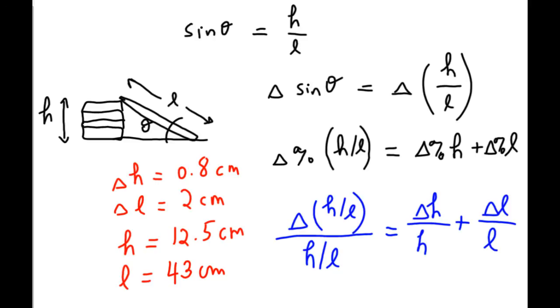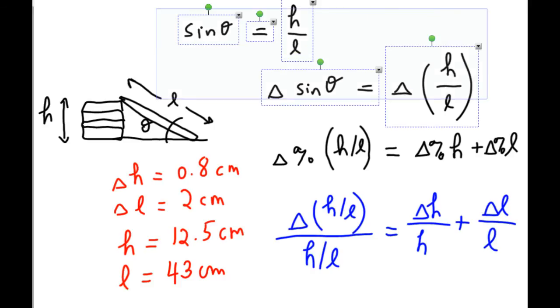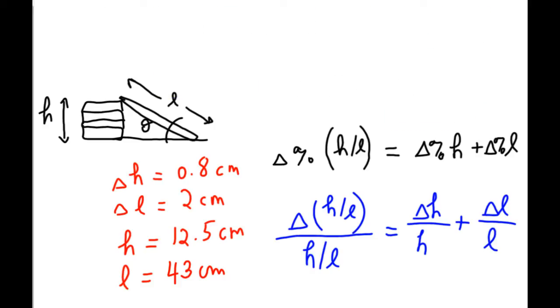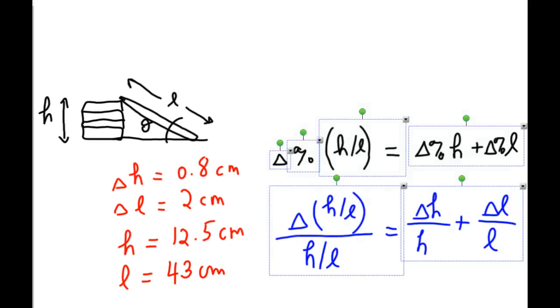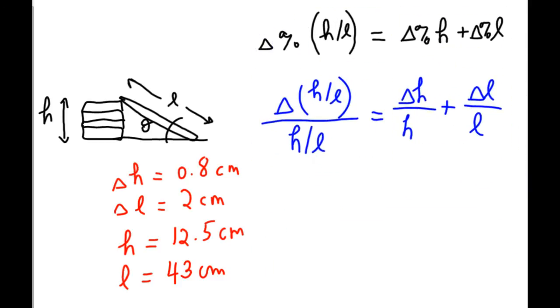In that case, I can solve for the absolute uncertainty in H over L in the following way. I plug in for everything except the unknown, which is delta H over L. So, H over L is 12.5 centimeters over the L value, 43 centimeters. And this is equal to delta H, 0.8 centimeters, over the H value, 12.5.